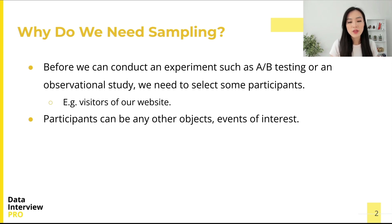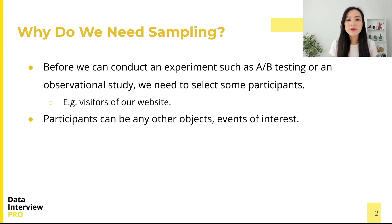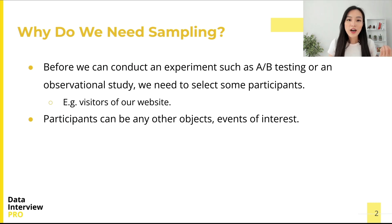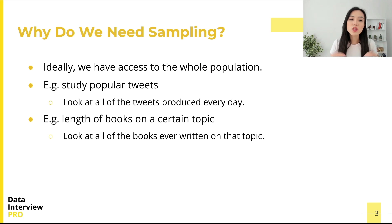Let's start with a typical setting when we study a problem in practice. Before we can conduct an experiment such as A/B testing or an observational study, we need to select some participants. The word 'participant' here is understood in a broad sense — this could be people, for example the visitors of our website or people having a certain medical condition, but they could also be any other objects or events of interest. Ideally we have access to the whole population we want to study.